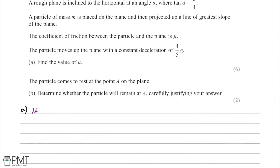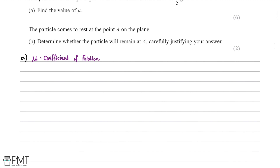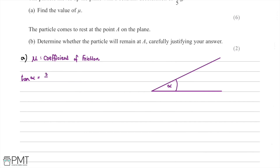To help understand the question I'm going to draw a diagram with the horizontal ground and our slope, marking the angle alpha. Since tan alpha equals 3 over 4, we can work out cos alpha and sin alpha by drawing a right-angle triangle. Using SOHCAHTOA, for tan it's opposite over adjacent, so the opposite is 3 and the adjacent is 4.